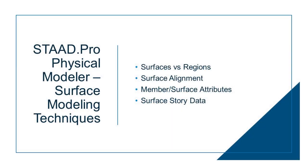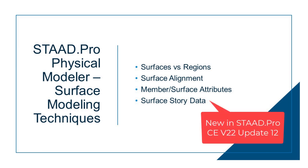The first main topic is how to prepare your STAAD Pro physical model to ensure your surfaces can be properly transferred to RAM Concept through iTwin Analytical Synchronizer. This includes the process for modeling surfaces and regions, assigning surface alignment if you have steps or different slab thicknesses at the same level, assigning member and surface attributes, and assigning surface story data. The story data option was added in the latest release of STAAD Pro Connect Edition version 22, update 12.